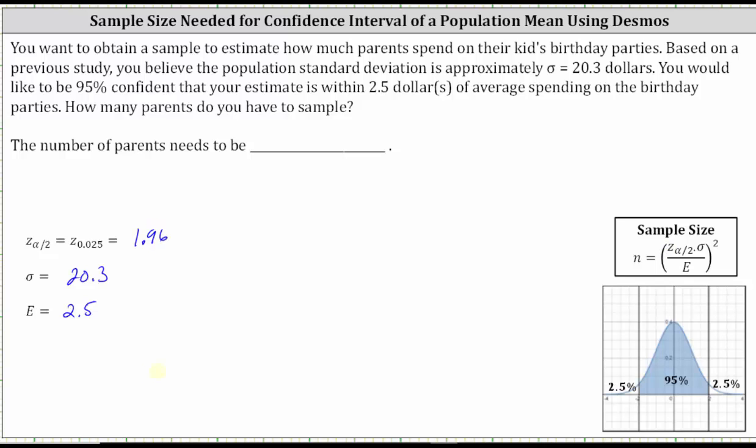And now we'll use the formula shown on the right to determine the sample size, where the sample size n is equal to the square of the product of the z-score and the standard deviation divided by the error. Now we go to Desmos and enter the sample size formula.